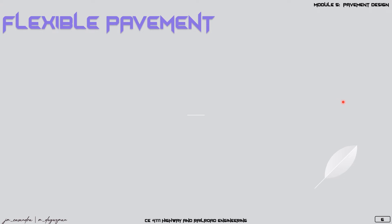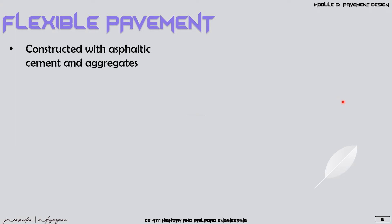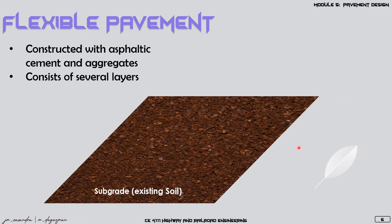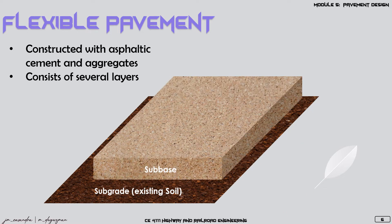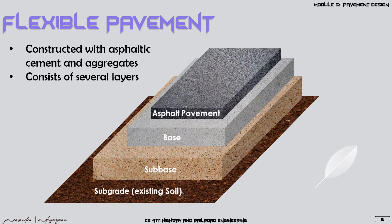Flexible pavements are pavements constructed with asphaltic cement and aggregates. A flexible pavement consists of several layers, including the subgrade or existing soil, the sub-base, the base, and the asphalt pavement or upper layer made up of asphaltic cement.